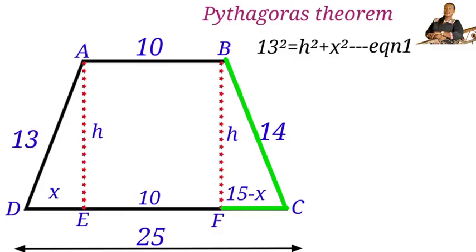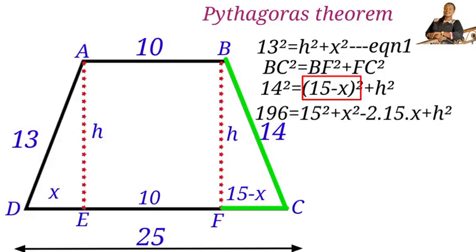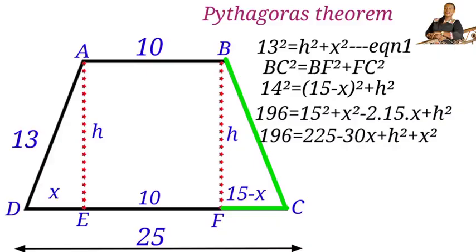For triangle BFC, applying Pythagoras' theorem: BC² = BF² + FC², so 14² = h² + (15 − x)². This gives 196 = h² + 225 − 30x + x². Expanding: 196 = 225 − 30x + h² + x².